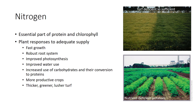Plants respond to nitrogen in the following ways. Nitrogen speeds growth. Plants receiving adequate nitrogen have vigorous growth, large leaves, and long stem internodes. Robust root systems need adequate but not excess nitrogen. Plants make large amounts of chlorophyll, the green pigment that performs photosynthesis. On well-fed plants, leaves are dark green. On poorly-fed ones, they are pale green.